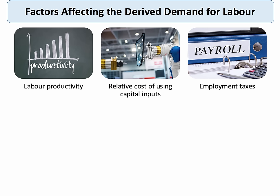A second key factor is the relative cost of using capital. If capital becomes relatively cheaper, some firms may replace workers with capital machinery — for example, in the security industry they might replace security workers with cameras or other forms of security device. Another important cost is the cost of employing people in terms of payroll taxes. In the UK we have national insurance contributions paid by both the employee and the employer, and if they go up it can become more expensive to employ people. Conversely, the government recently cut national insurance contributions for firms that take on long-term young unemployed workers, which reduces the cost of employing people and will increase labour demand.